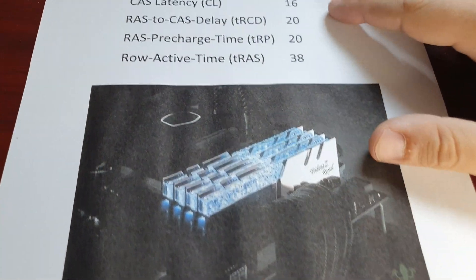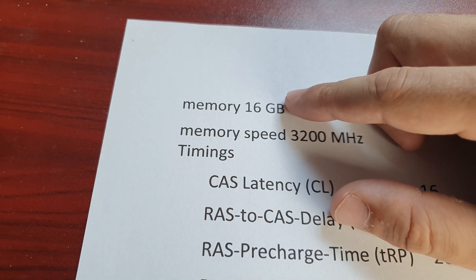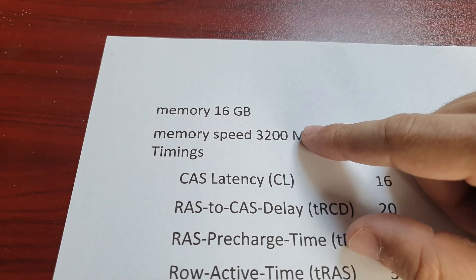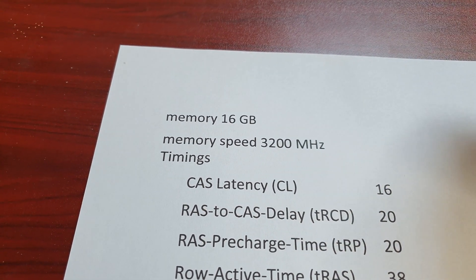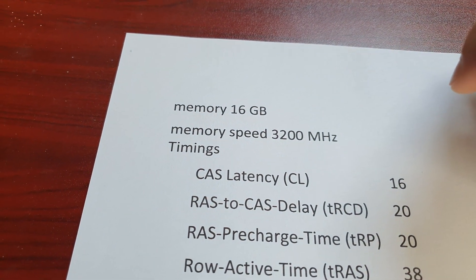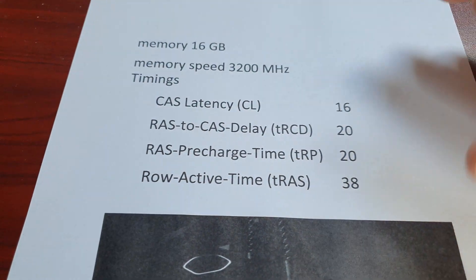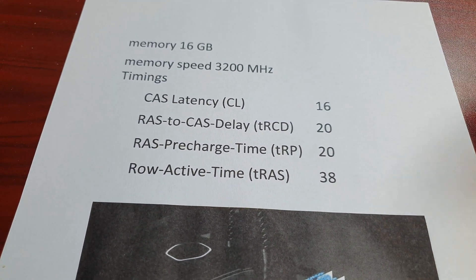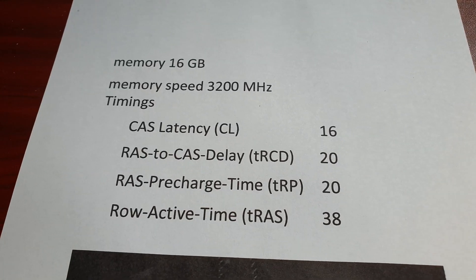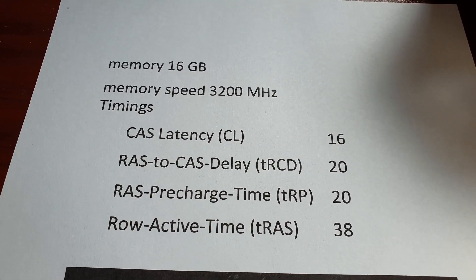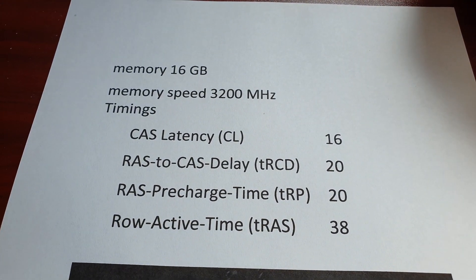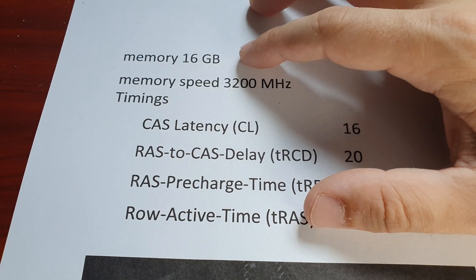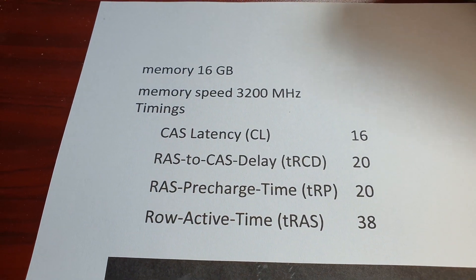For memory, I recommend you use at least 16 gigabytes — that's more than enough for every game out now. The best price-per-dollar for performance is 3,200 MHz. There are also timings: the lower those numbers are, the tighter the timings and the faster the memory. A lot of people say when you have a slow computer just put in more memory because it's a cheap solution, but it's not going to make your computer faster unless you have only 4 gigabytes, which isn't enough for this day and age.